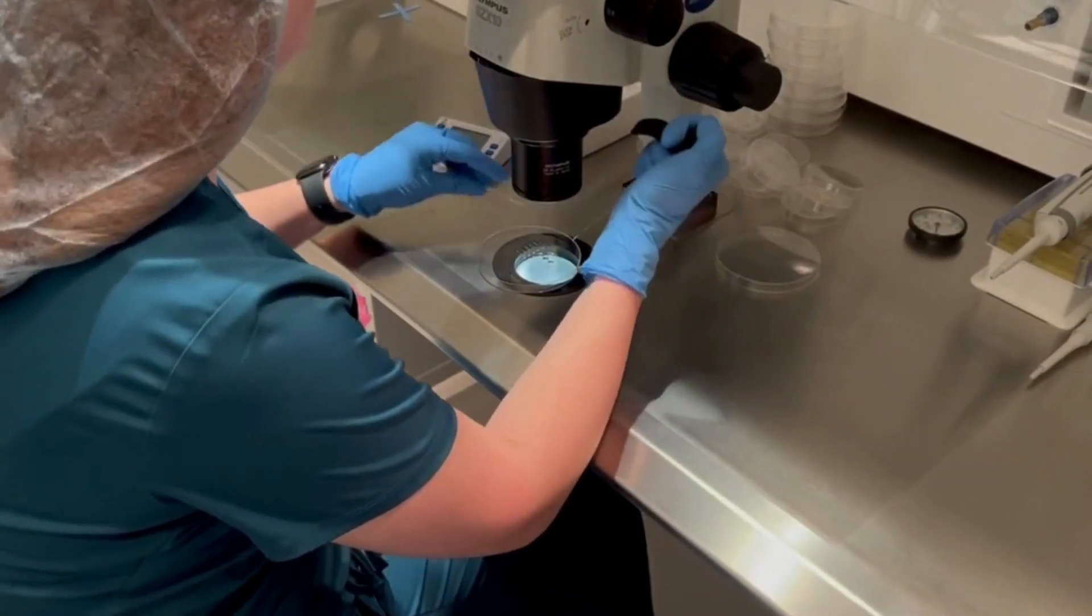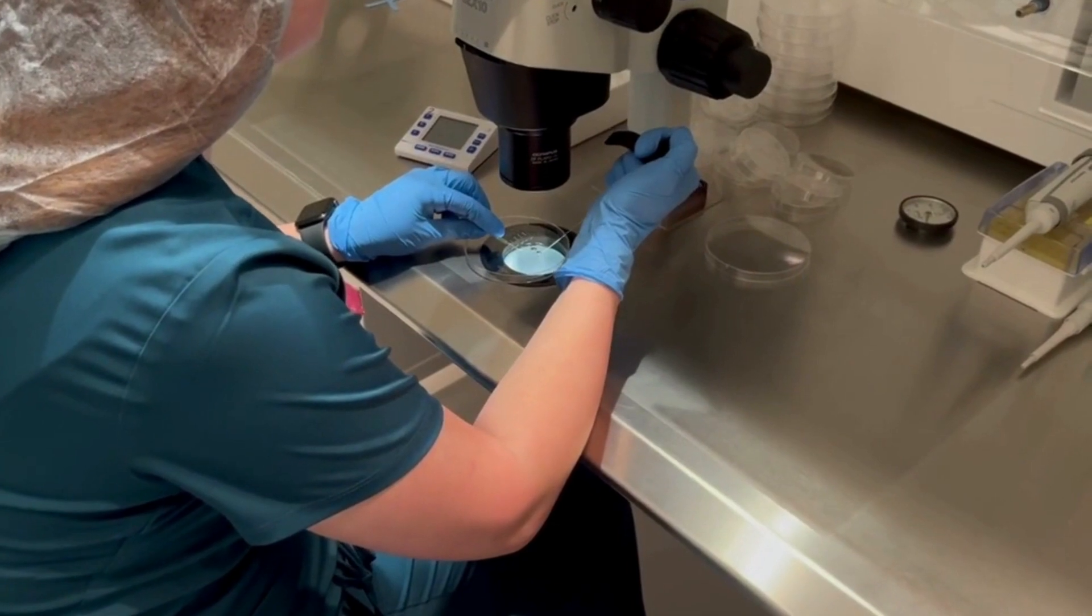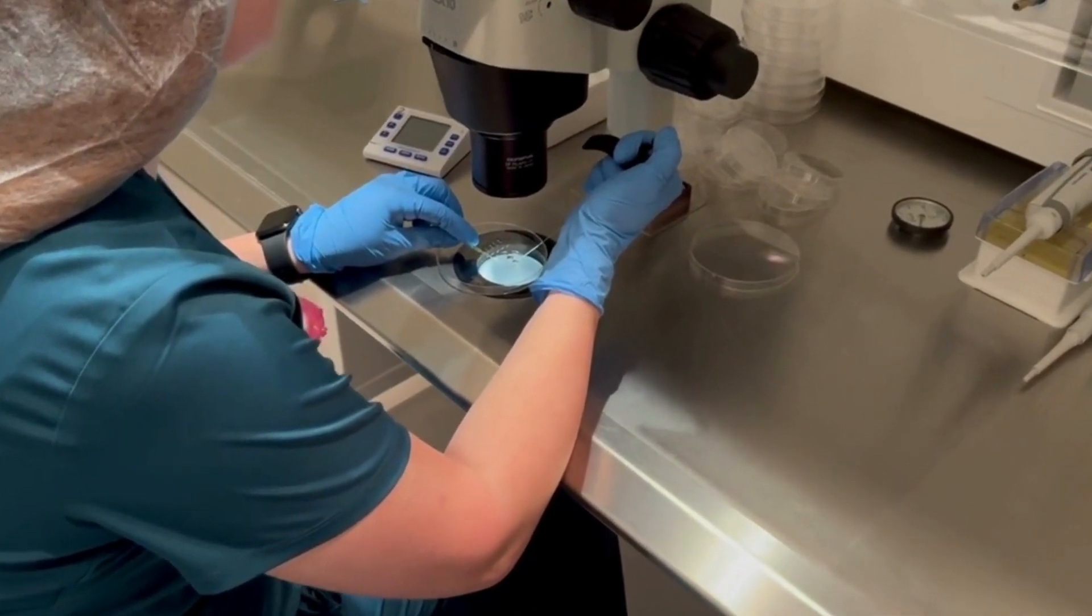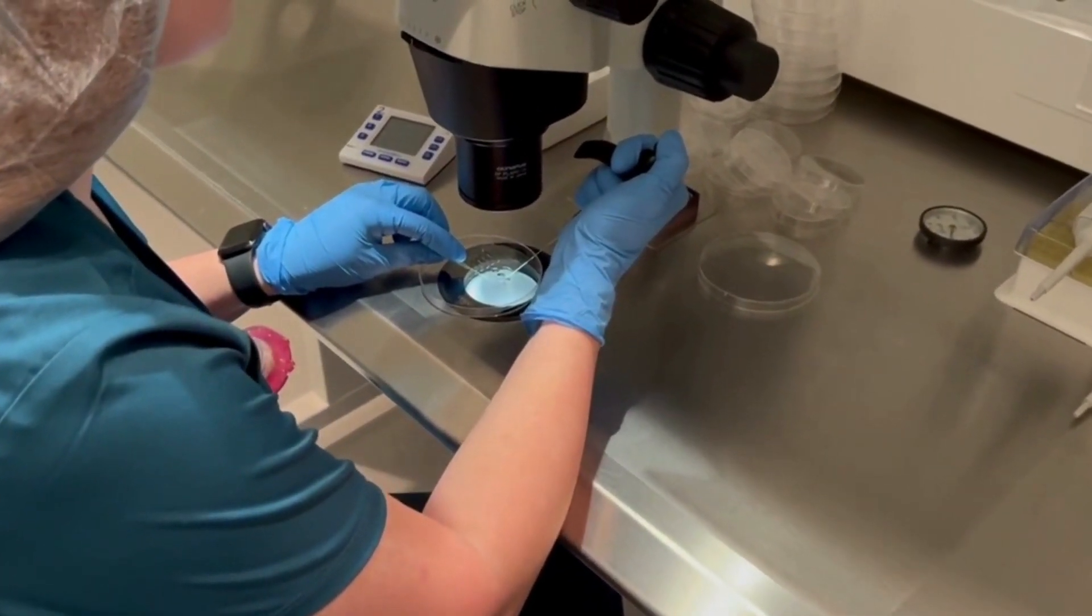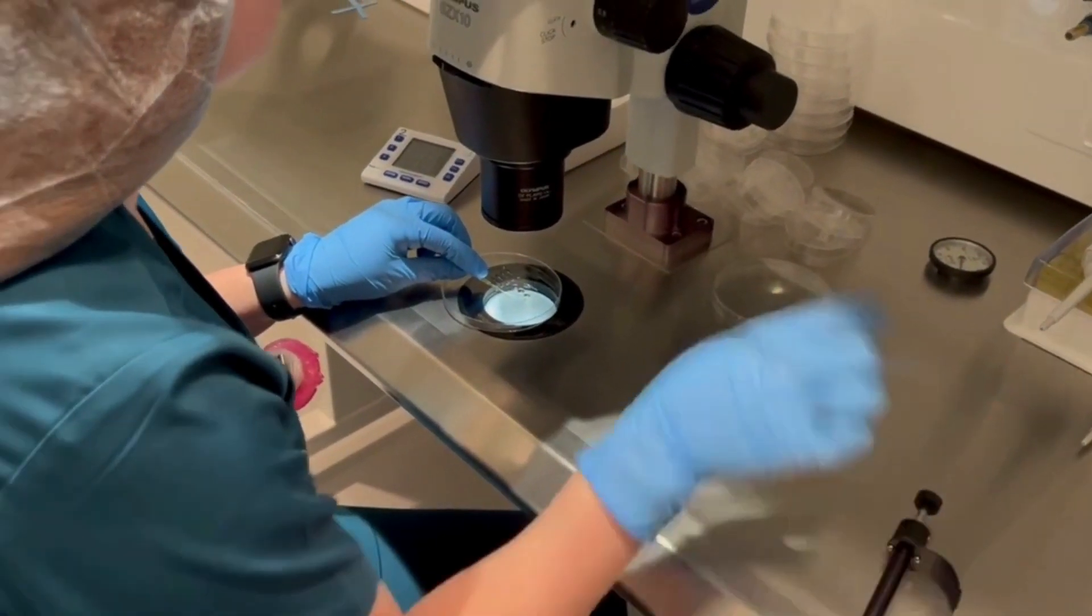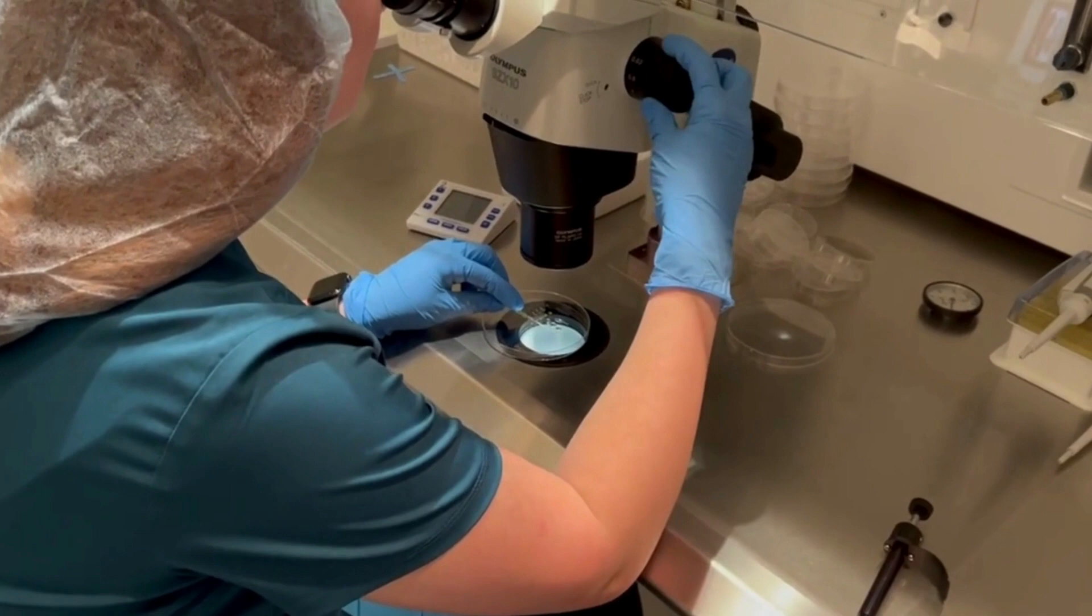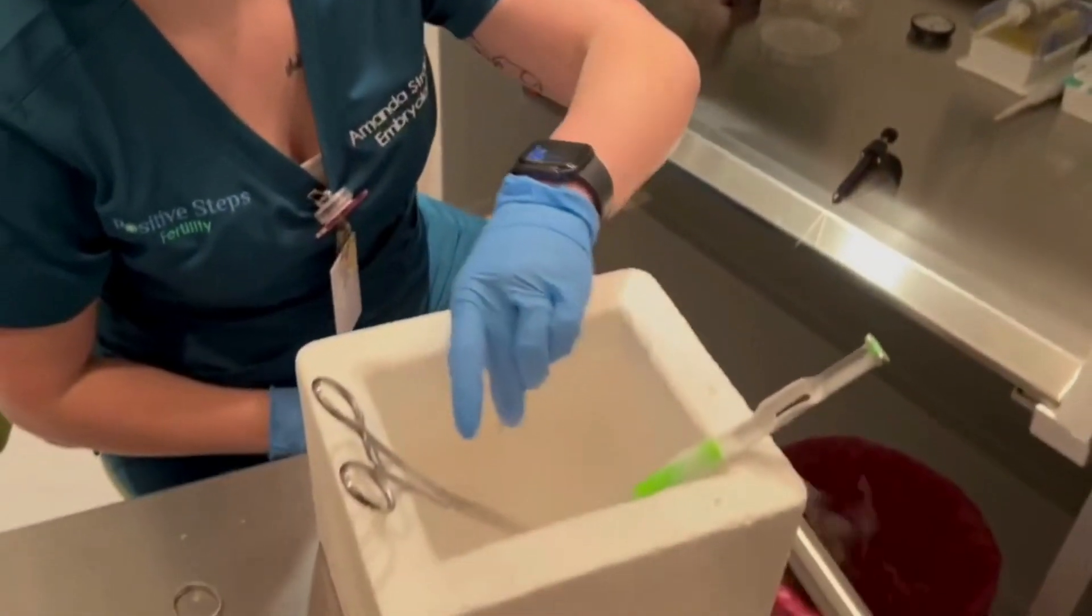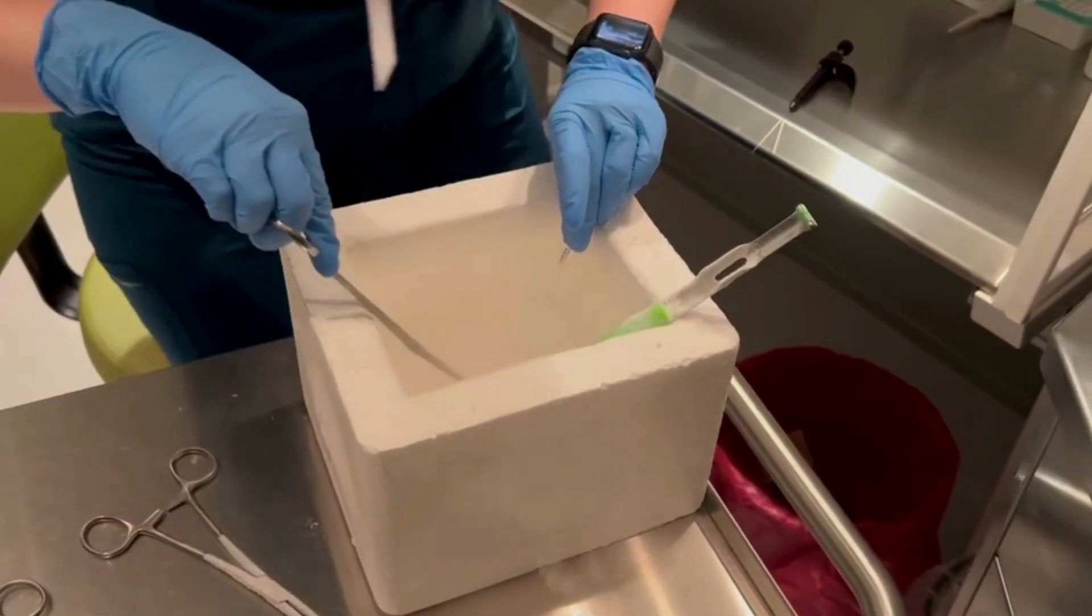Next, the embryo is frozen or vitrified. And what you see here is the last step in the vitrification process. We are placing the embryo on the very tip of the storage device or what we call the straw. And then we plunge it into the liquid nitrogen where it is instantly frozen.